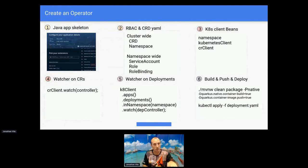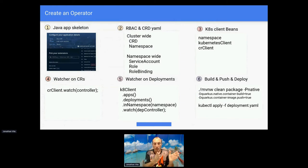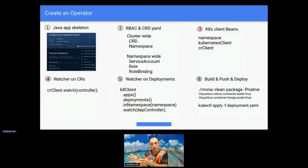The parts for the creation of the operator: first we create a Quarkus Java application skeleton, then we create the objects defining the elements for the operator in Kubernetes. We need to create a namespace, define the CRDs which are cluster-wide, and then namespace-wide we have a service account for our operator - like a user for the operator to interact with the cluster - then the role defining what actions can be done, and the role binding connecting the service account and the role.